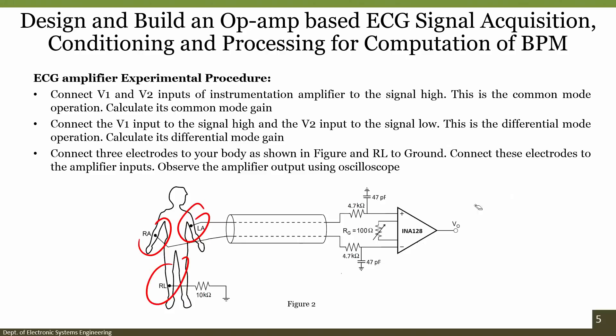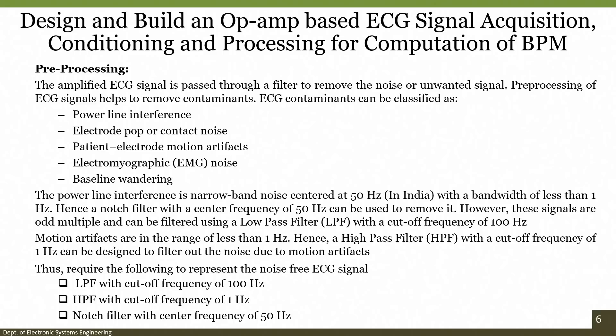Pre-processing is an important part. The amplified ECG signal is processed through a filter to remove noise or unwanted signals. Pre-processing of ECG signals helps to remove contaminants. The contaminants in ECG signals include electrode pop or contact noise, baseline wandering, EMG noise — also called electromyograph — and patient electrode motion artifacts. If the patient is moving while electrodes are connected there is a motion artifact that must be addressed. EMG comes from the muscles; any signal generated from the muscles can be measured with an electromyograph.